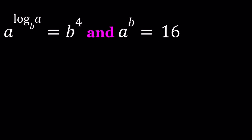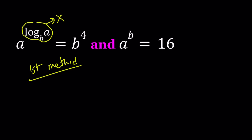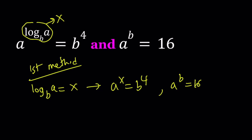Let's start with the first method. For our first method, I'm going to use substitution. Let's call this x. So it tells me that log base b of a equals x. And from here, I get a to the power x equals b to the power 4. I also have a to the power b equals 16. My assumption also gives me another equation. Using the definition of logarithms, we can write that b to the power x equals a.